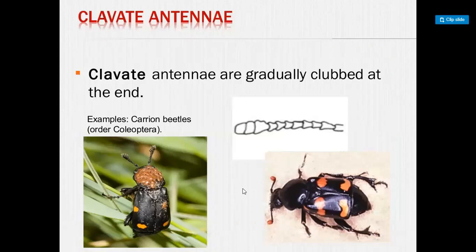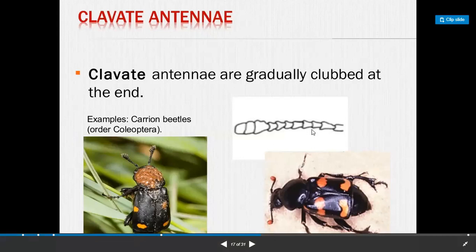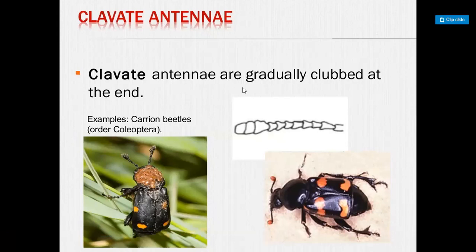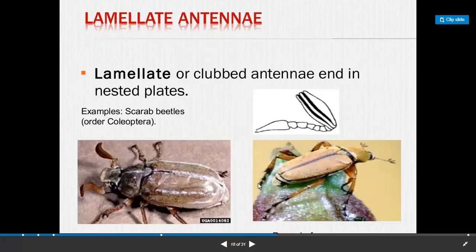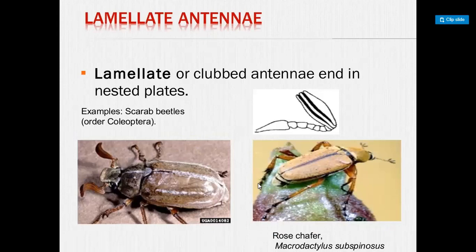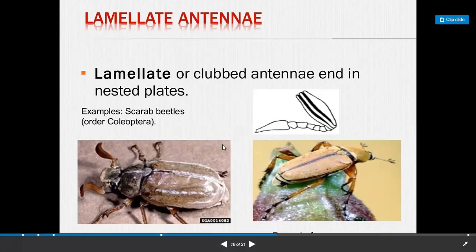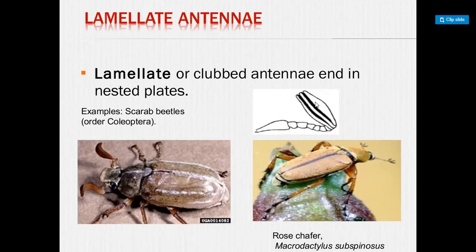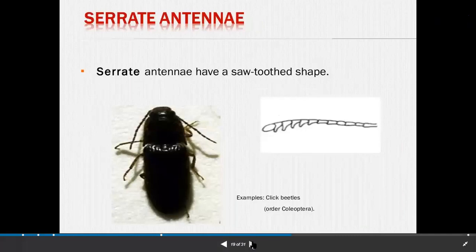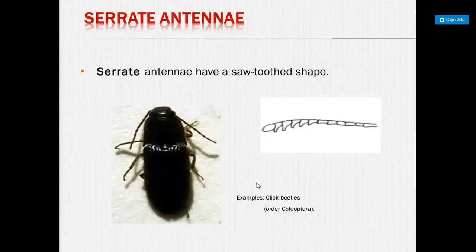Next is clavate antenna. Clavate antenna are gradually clubbed at the end. Example: carrion beetle, order Coleoptera. In clavate type, the flagellum is not straight but gradually clubbed at the end. Next is lamellate antenna. Lamellate or clubbed antenna have nested plates at the end — they are a nest-like structure where the flagellum is straight but the clubbed end has nested plates. Example: scarab beetles, order Coleoptera.